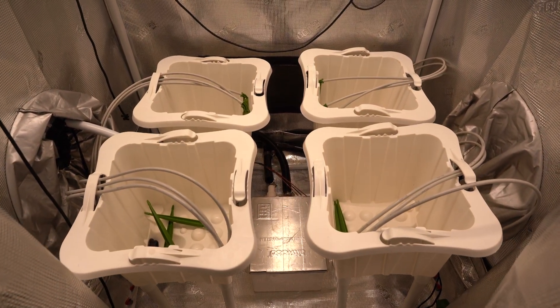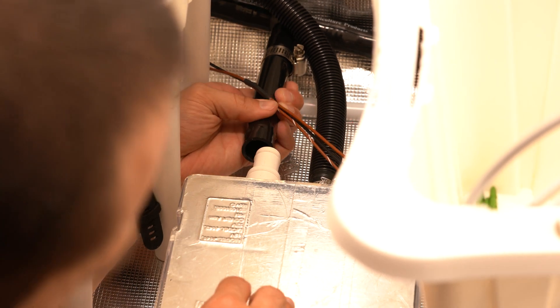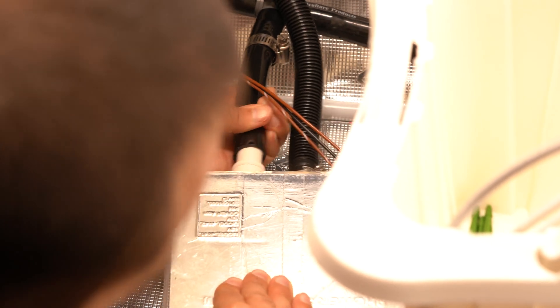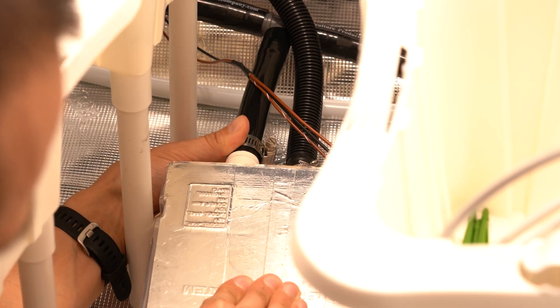I added the 1.2 gallon buckets back in the tent and connected them to the runoff pump. I started the drippers and made sure there were no leaks and that the pump was working properly.